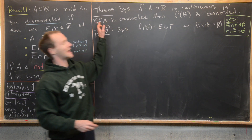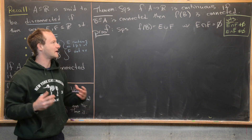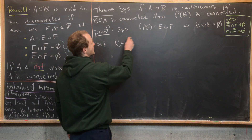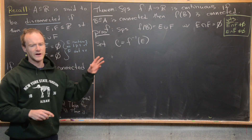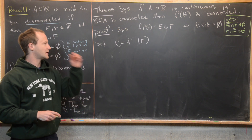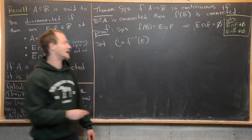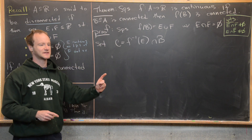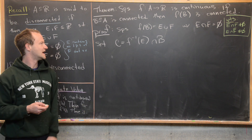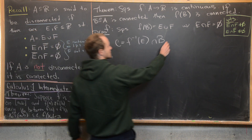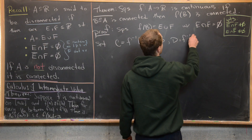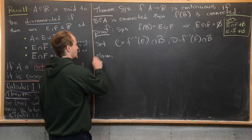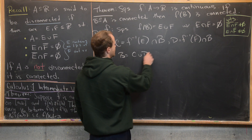We want to get back to set B because we know B is connected. We'll do this using inverse images. Set C equal to the inverse image of E intersected with B — we intersect with B because E may contain points coming from outside B if F is not one-to-one. Similarly, set D equal to the inverse image of F intersected with B. We claim that B = C ∪ D.